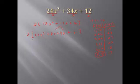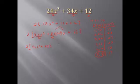Splitting the middle term allows us to do factoring by grouping. We make two groups: the first group is 12x squared plus 8x, and the second is 9x plus 6. The greatest common factor of the first group is 4x — four goes into both terms and both have an x — so we factor out 4x, leaving 3x plus 2. The GCF of the second group is 3, so we factor out 3, leaving 3x plus 2.